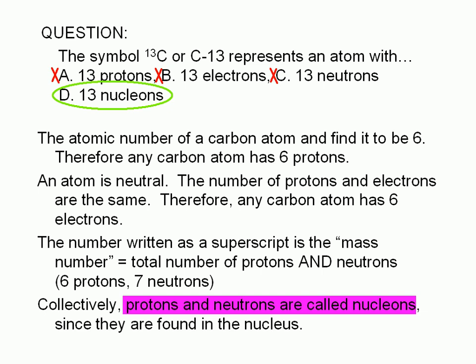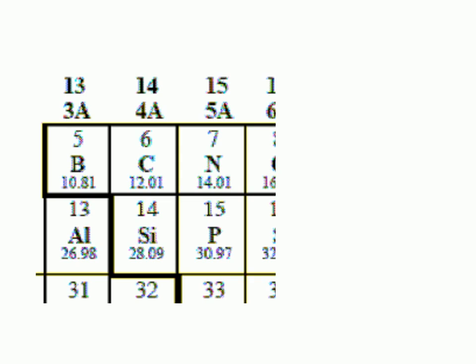If you don't know how to find the atomic number, here's how you can find it from a periodic table. Each element in the periodic table typically comes with at least two numbers. The smaller number — the whole number — is the atomic number. As you can see here, the atomic number of carbon is 6.